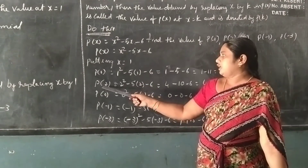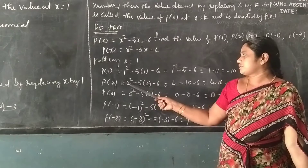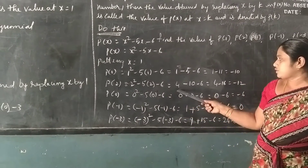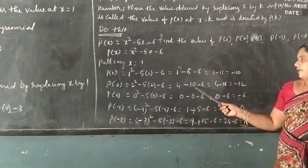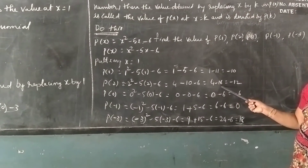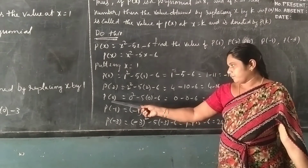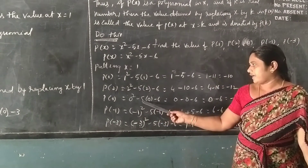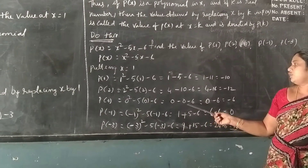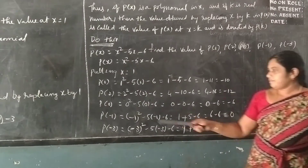Then putting x = 2: P(2) = 2² - 5 × 2 - 6, which is 4 - 10 - 6 = -12. Again, P(0) = 0² - 5 × 0 - 6. That gives 0 - 0 - 6 = -6.